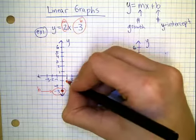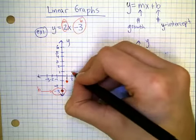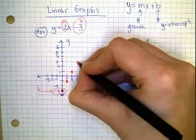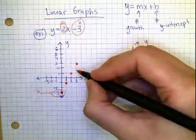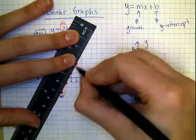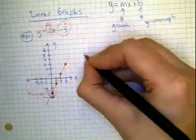Then continue that pattern up two, over one. Up two, over one. Up two, over one. Do that a few times until you get three or four points that can make a good line. You don't have to do it over and over forever, just enough to see the pattern and draw the line.